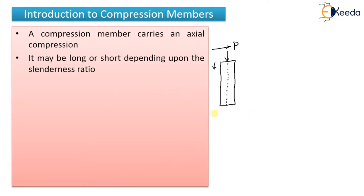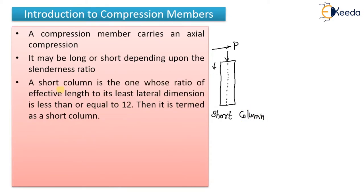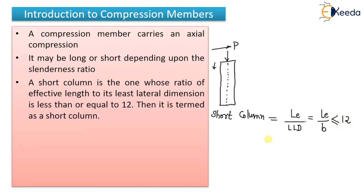First one is short column. A short column is one whose ratio of effective length to the least lateral dimension is less than or equal to 12. The ratio of effective length — denoted by LE — to the least lateral dimension, in short LE by B, if it is less than or equal to 12, then that column will be called a short column.